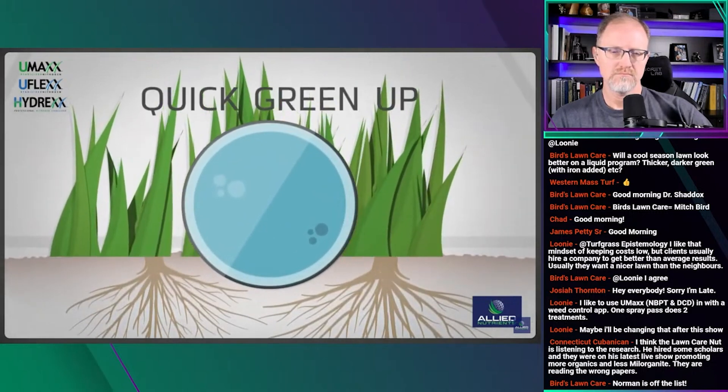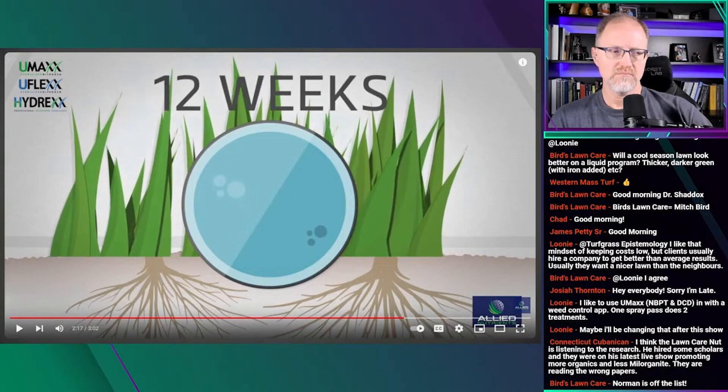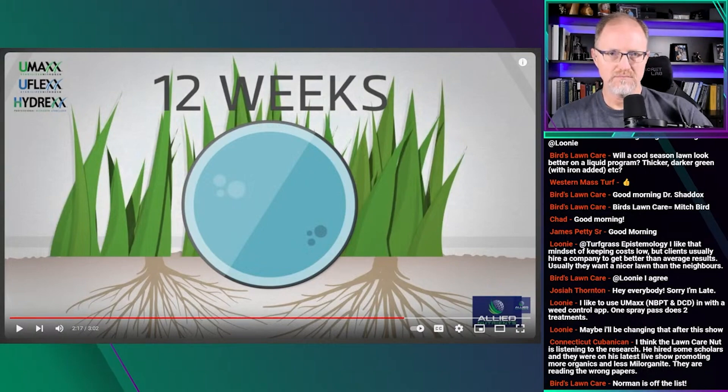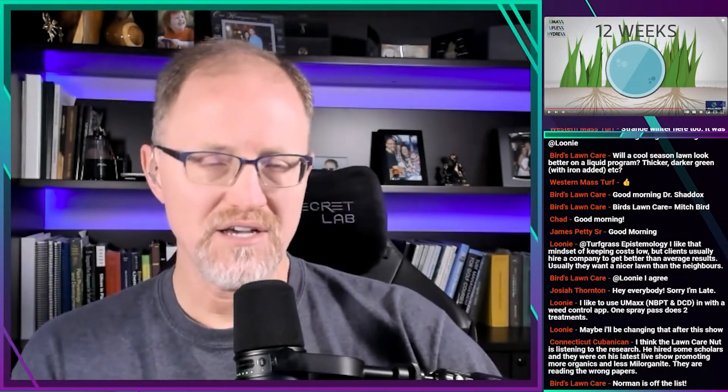The video claims EEFs with dual inhibitors allow time for nutrients to move into the root zone and stay there longer, providing a turfgrass response of up to 12 weeks. So just to be clear: what they're saying is mostly accurate in terms of the mechanism. This is from Allied Nutrients, by the way — their YouTube channel. But when they say 12 weeks of extended release, that's not accurate. The response will last up to 12 weeks without the inhibitors as well. In other words, it's not lasting 12 weeks because of those additives.